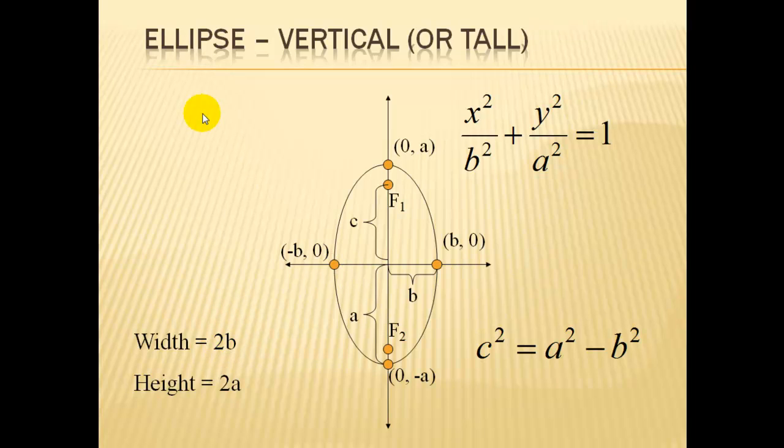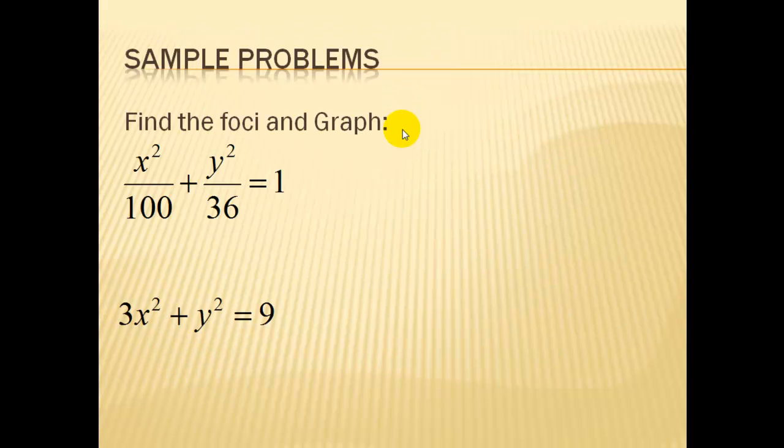So let's go through some sample problems and apply this template. We'll start out by graphing. So in a minute we'll put this up. But we can tell on this problem that it's going to be a horizontal ellipse because the bigger number is under the x squared. We also know it's an ellipse because we have 2 squared letters with a plus and a 1 over here. So let's go about how we find the foci and graph this one.